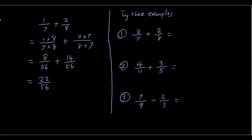Try these examples and come back when you're finished. Okay, first: three over seven plus two over eight. Let's make both denominators 56 — times both the top and the bottom of the first fraction by 8, and both the top and bottom of the second fraction by 7. We're left with twenty-four over fifty-six plus fourteen over fifty-six, which gives us thirty-eight over fifty-six.